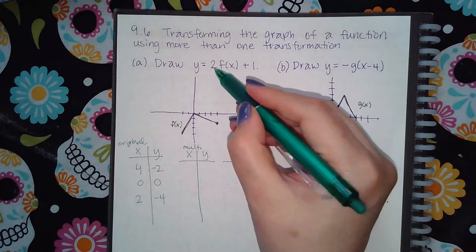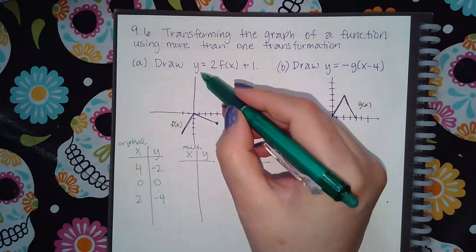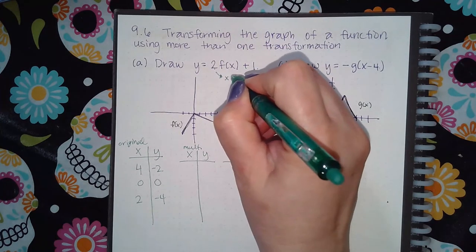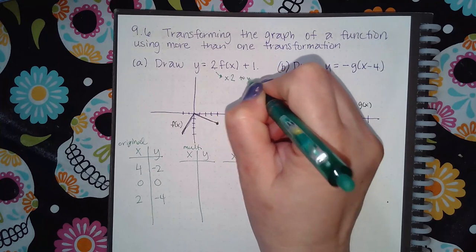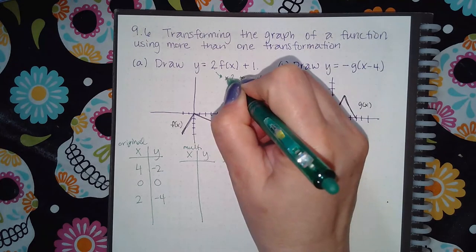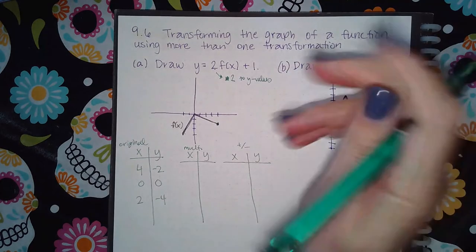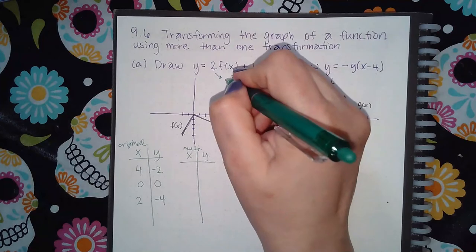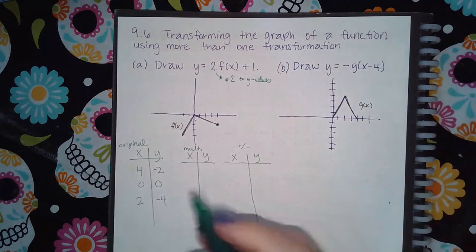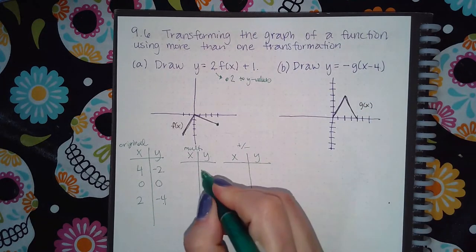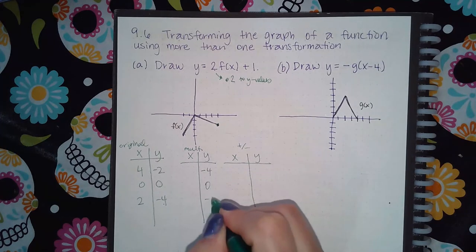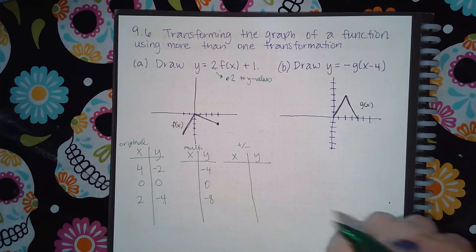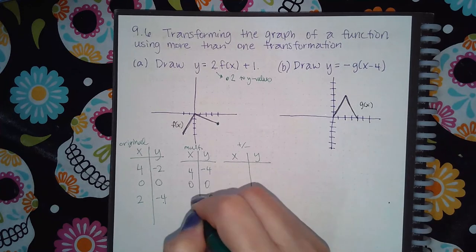Now, because this is multiplying by two outside the basic function, that means we're going to multiply two to the y values. And that's not an x, that's a multiply. Okay, you could put a dot instead if an x confuses you. So I'm going to take each one of these y values and multiply them by two. I get these new y values. Now I haven't done anything to the x's. So I'm going to keep those exactly the same.